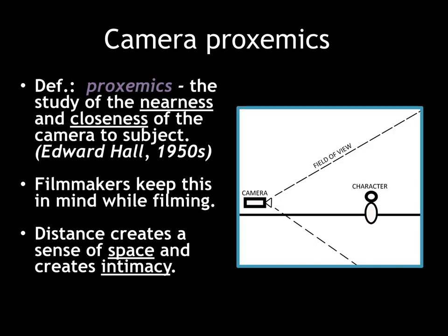Camera proxemics is the study of the nearness and closeness of the camera to the subject. As a cinematographer, you always have to be conscious of the distance of the camera to the subject because distance creates a sense of space and intimacy between the character and the audience. Sometimes cinematographers use proxemics and camera movement to articulate an idea visually — if something is important, the camera moves closer towards it. The word proximity gives us the word proxemics.